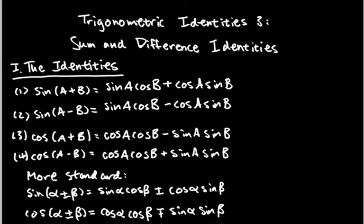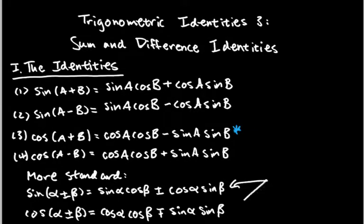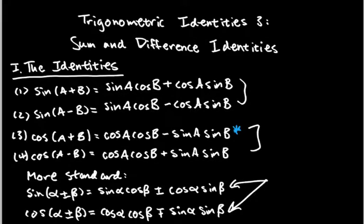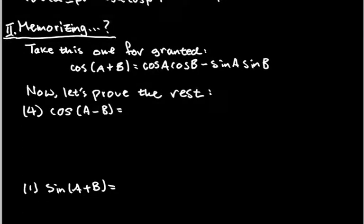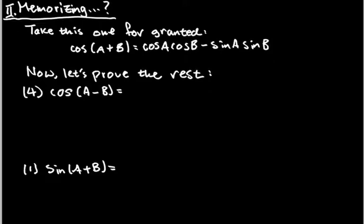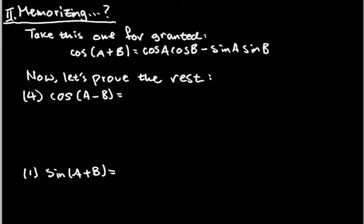You don't have to memorize all of these — I memorize just one of them. This is the one I memorize, and I'm going to show you how you can memorize that one only and get all of them. Also, if you kind of memorize them in a grouped way, that helps reduce the number of things you memorize, because notice there are similarities between these two and between these two. So I'm going to take this one for granted — specifically cos(a+b) — and use that to prove the others.